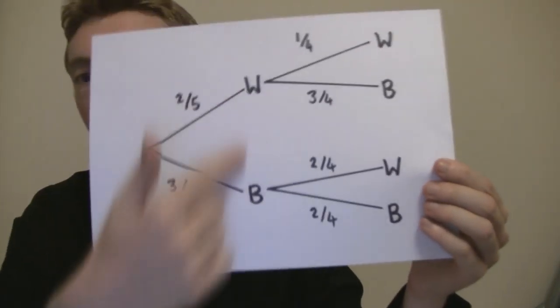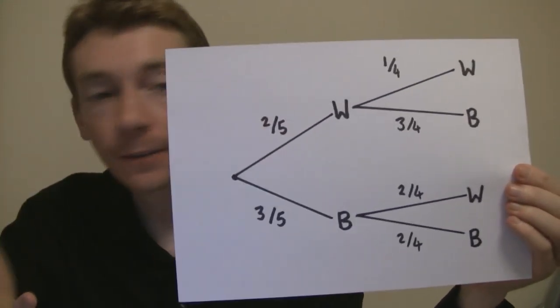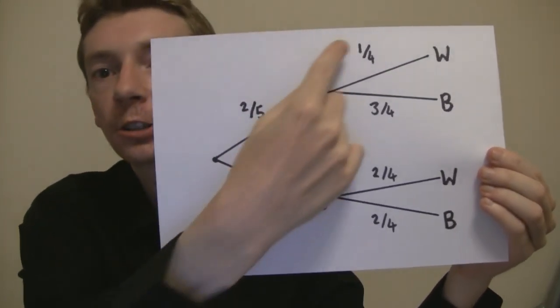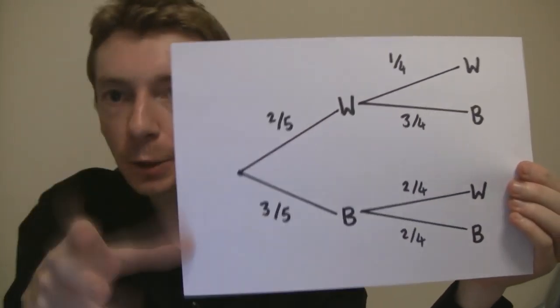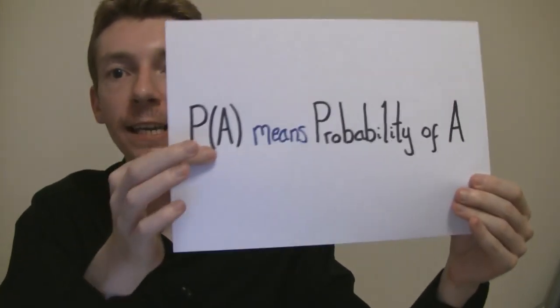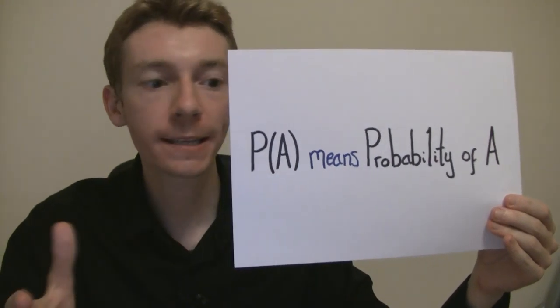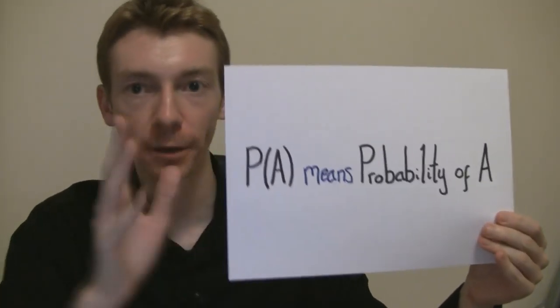One way to write this down is like this. This is the first ball, this is the second ball. Notice that the odds are not even, and notice as well, when I pick a ball, the odds change for the second ball. The probability of A is written with a capital P for probability and A in brackets. For example, the probability of picking a white ball is two out of five. That's our first piece of notation.